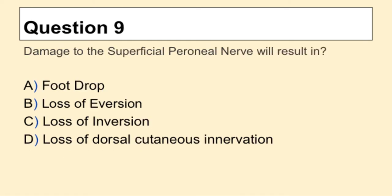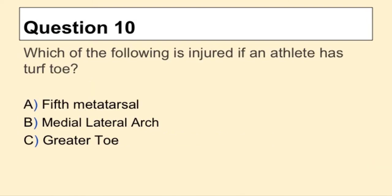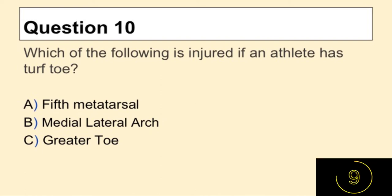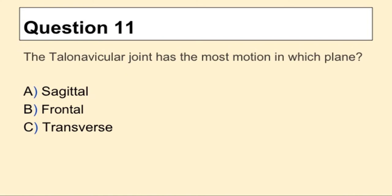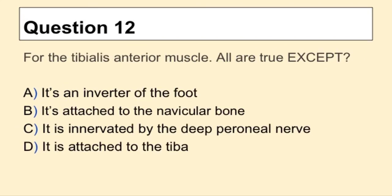Question 8: A grade 2 ankle sprain is marked by? Question 9: Damage to the superficial peroneal nerve will result in? Question 10: Which of the following is injured if an athlete has turf toe? Question 11: The talonavicular joint has the most motion in which plane?